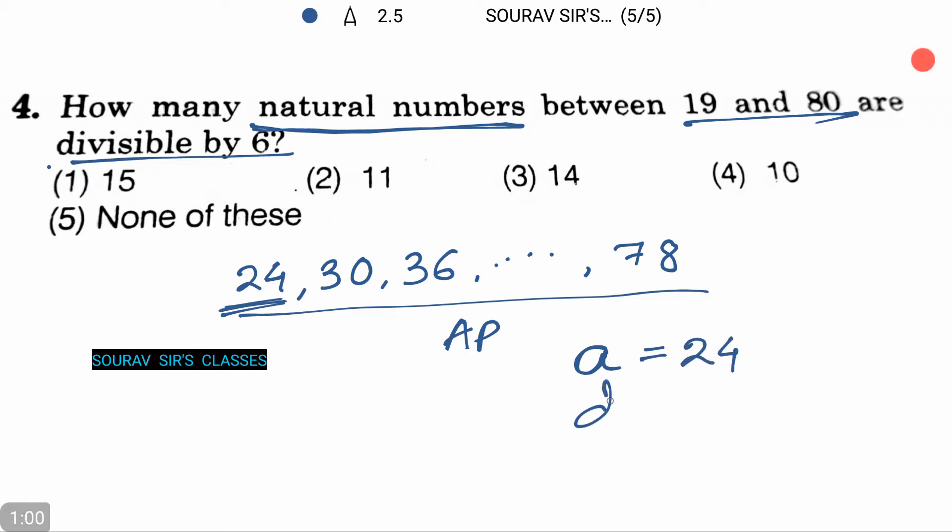The common difference between the numbers that we denote as D is 30 minus 24, or we can get it as 36 minus 30, that is 6. The last term is 78.